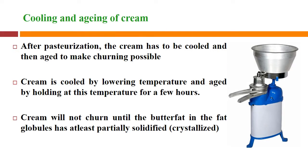After pasteurization the cream has to be cooled and then aged to make churning possible. The cream is cooled by lowering the temperature and aged by holding at this temperature for a few hours. The cream will not churn until the butter fat in the fat globules has at least partially solidified. By cooling, the butter molecule is partially solidified or crystallized, making churning feasible for separating and coalescing the fat globules into a solid mass of butter.